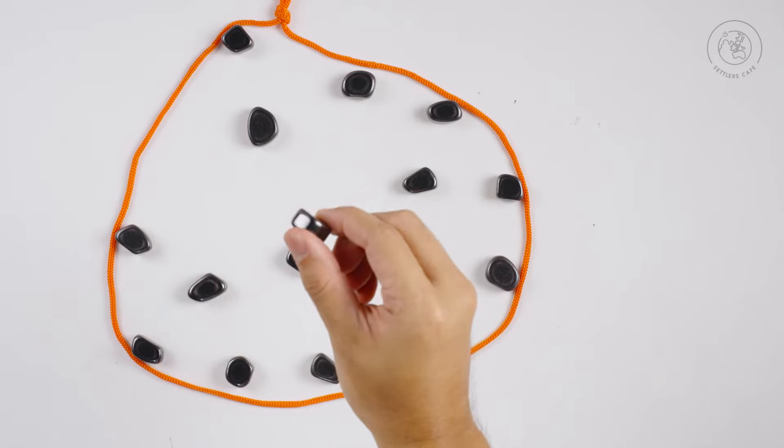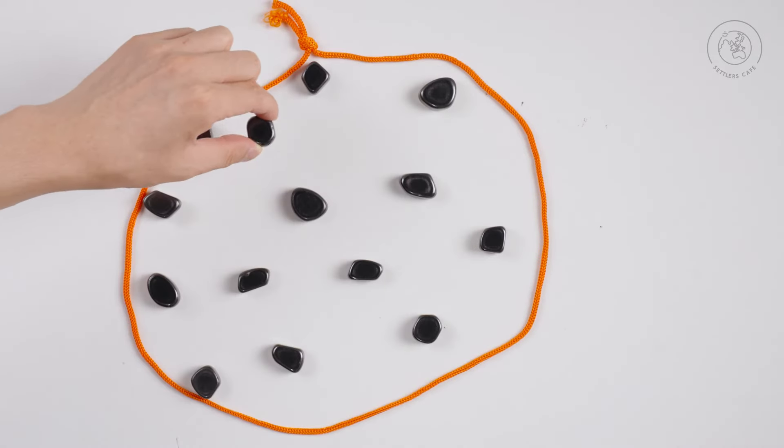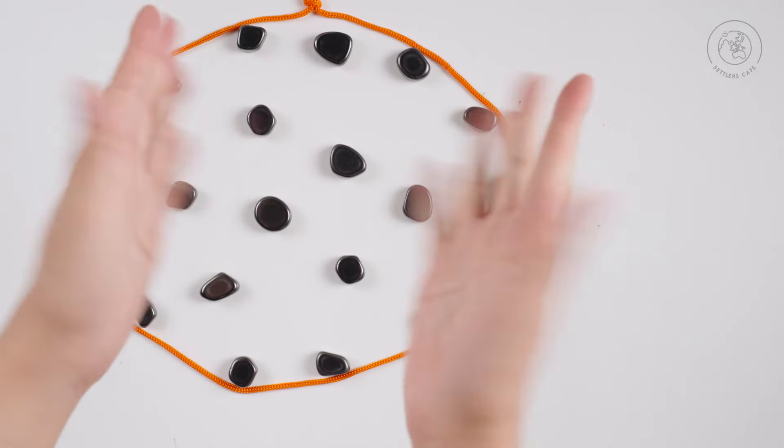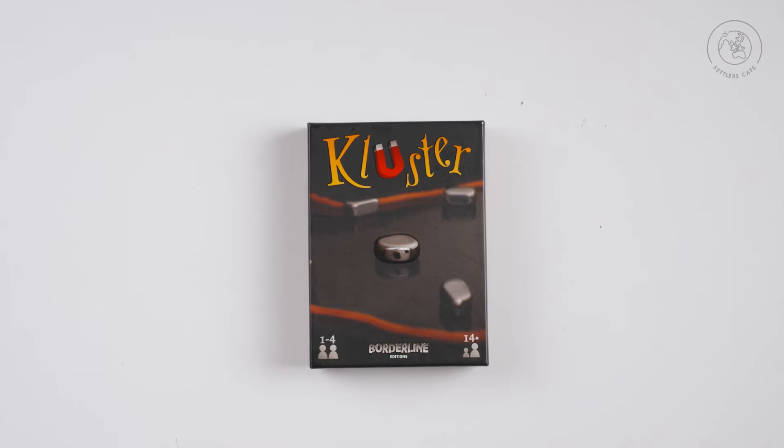If you want to be daring, you can try placing magnets on their sides. Try to make your opponents cluster and be the first player to get all of your magnets from your hand and into the middle to win the game. And that's how you play Kluster.